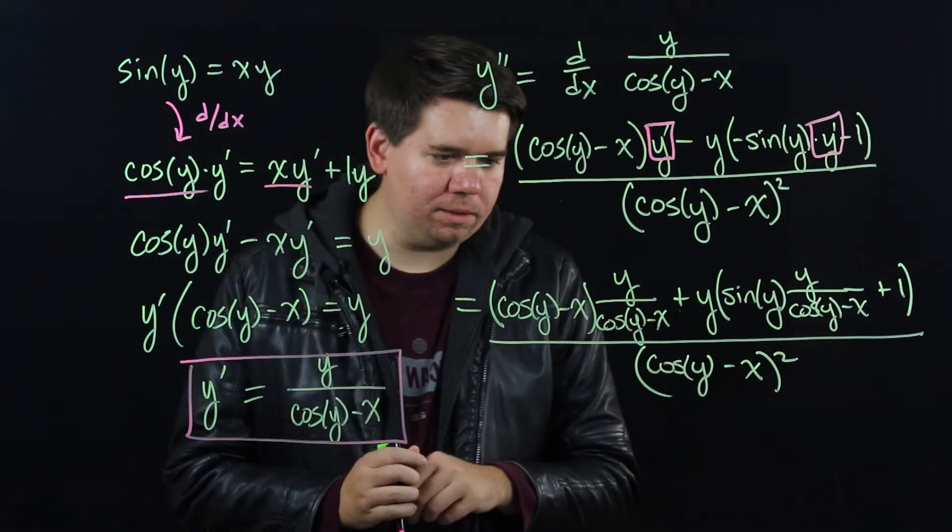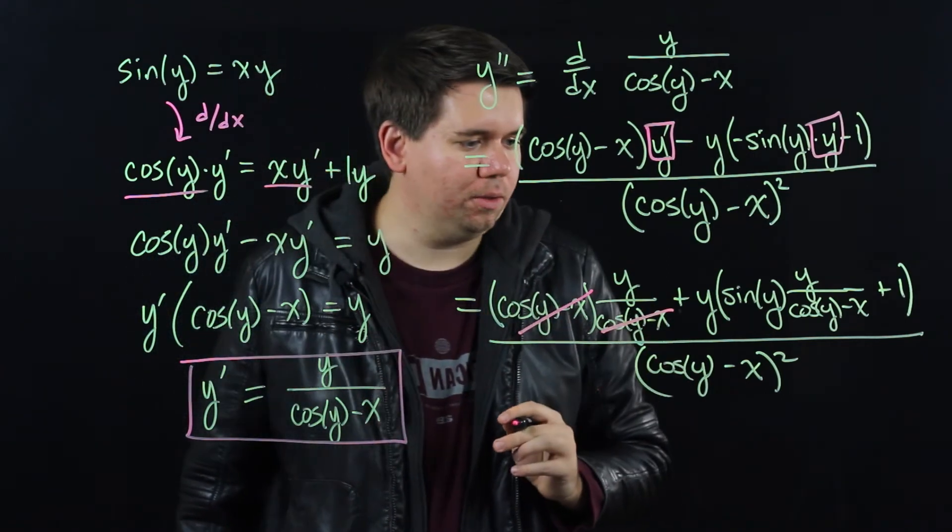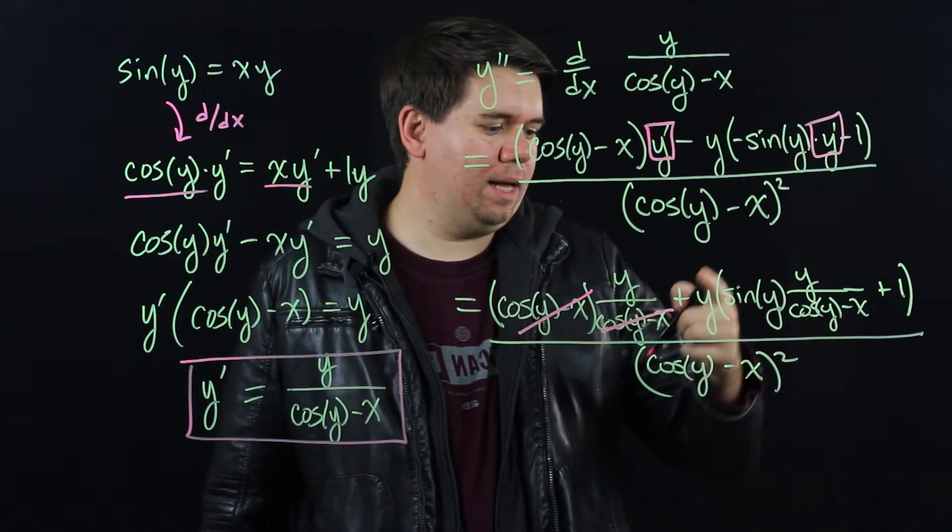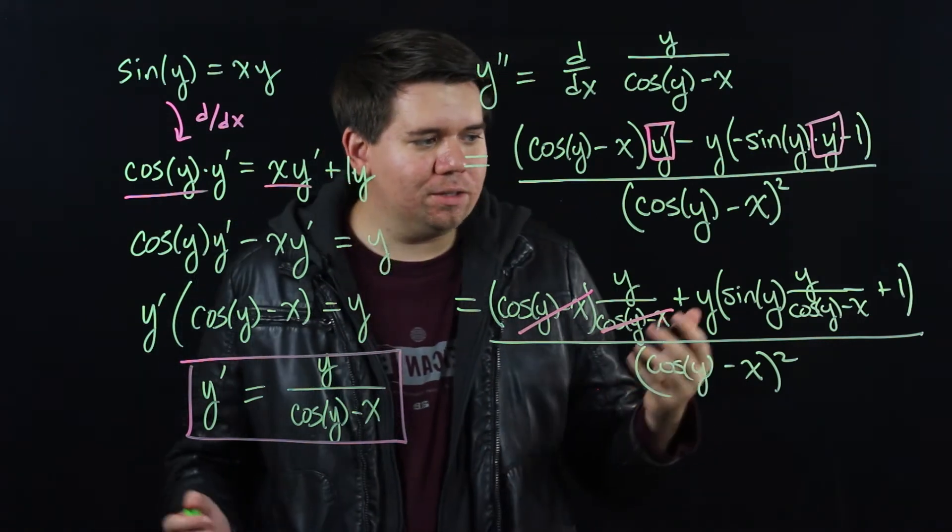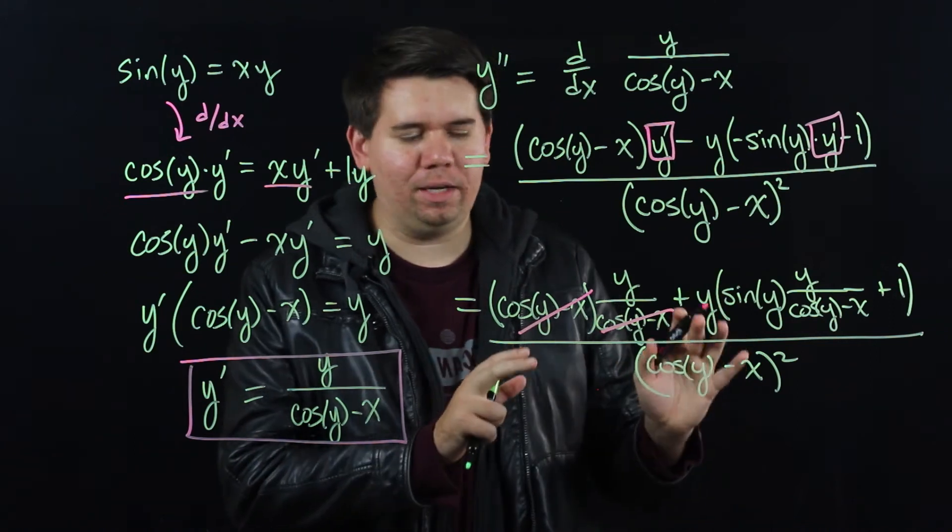Now you could simplify things a little bit. For instance, the cosine of y minus x here and here just cancel. And then you can combine this all into a single fraction and you can simplify things a little bit, but I'm somewhat satisfied with how this is so I'll leave it here.